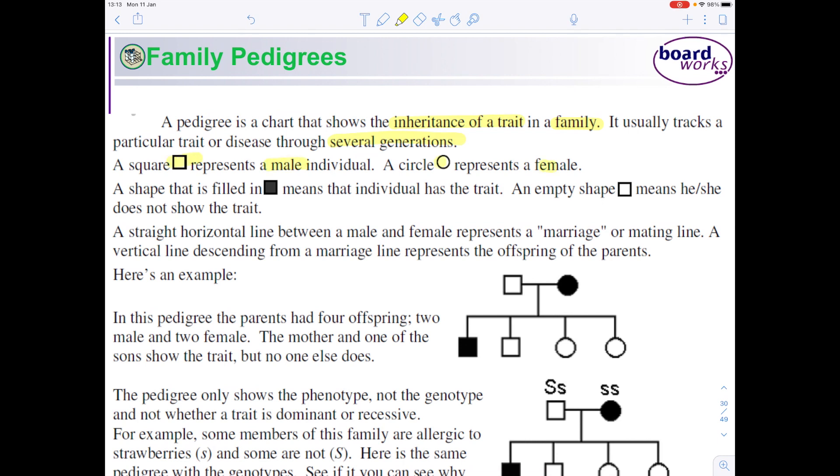So really you have a family tree. Notice that a square always represents a male individual and a circle represents a female. If you have that solid filled-in shape, then it means that the particular individual has the trait. If it's empty or unshaded, it means that they do not have the trait. The straight horizontal line between the male and the female represents a mating line.